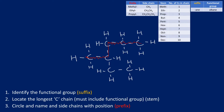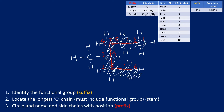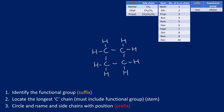Next molecule: identify the longest chain. Counting gives one, two, three, four, five, six — and I can't beat six. So the longest chain is six carbons: hexane, with stem 'hex' and suffix 'ane'. It has a methyl side chain. Numbering from either direction places the methyl at position three or four — I must take the lowest number, so this is 3-methylhexane.